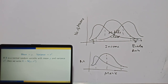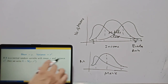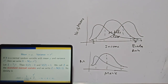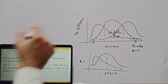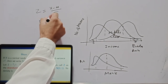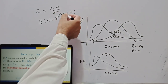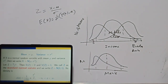If x is a normal random variable with mean μ and variance σ², we write X ~ N(μ, σ²). The standard normal variate is defined as Z = (X − μ)/σ. Its expectation is (1/σ)(E(X) − μ) = (μ − μ)/σ = 0, and its variance is 1. So the standard normal variable has mean 0 and variance 1, written Z ~ N(0, 1).